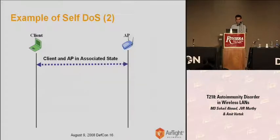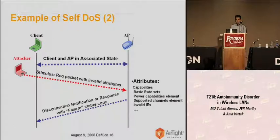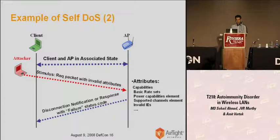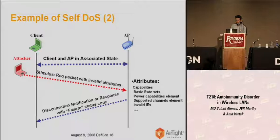Let's take another example. The client is associated with the access point and doing data transfer. An attacker injects one request packet spoofing the identity of the client and keeping invalid attributes in that packet. When the access point receives this packet, it finds that the client which was already associated is sending a fresh request packet with invalid attributes — attributes that do not match with attributes of the network or access point. So the access point sends a response message saying it will tear down the association because the attributes are not matching, and the connection breaks. The attacker simply injected one packet and was able to break the connection.